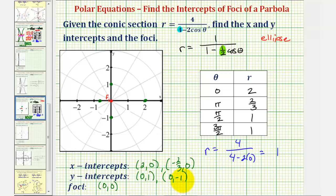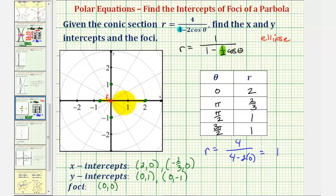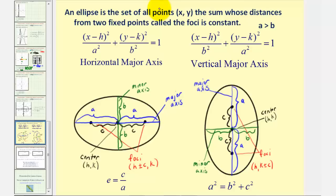Now we still have to find the coordinates of the other focus — we only have one right now at the pole. To help us do this, we need to recognize that this is the major axis. The midpoint of the major axis would be the center of the ellipse. So we'll first find the center of the ellipse, and then we'll find the other focus. Notice how the two foci are c units from the center. We already have one focus, so once we find the center we can find c, and then find the other focus.